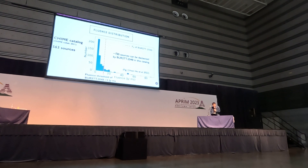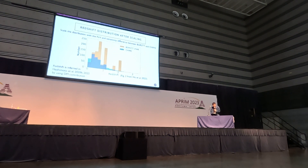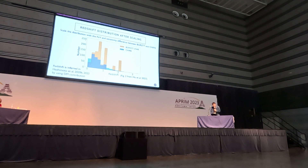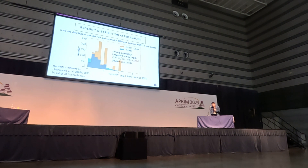There are about 100 sources that can be detected. We then plot the redshift distribution using the redshifts from Hashimoto et al. 2020 and 2022, where they use the DM contribution to infer the redshift. We also scale the distribution by the difference in field of view between BURST and CHIME. We get this orange distribution, which is the redshift distribution of BURST. This is important because we need to know the redshift distribution in order to constrain the lensing event rate and lensing probability for BURST.